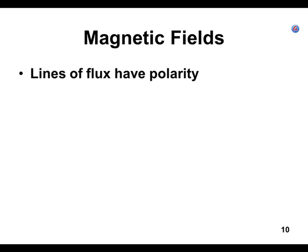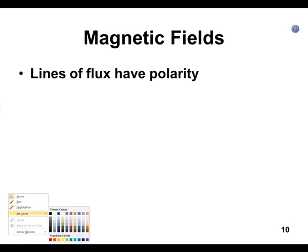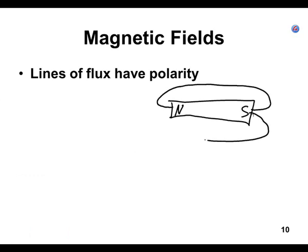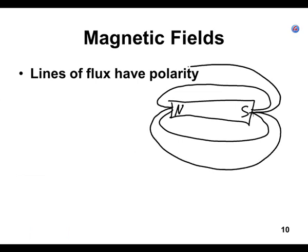When I say these lines of flux have polarity, I'm talking about one side having a north pole and one side having a south pole. The lines of flux come out of one side and go into the other — and they go through the magnet too. These lines of flux attract ferrous metals.